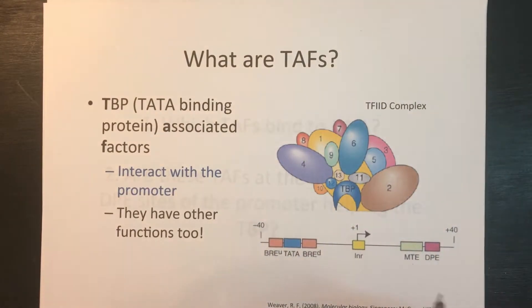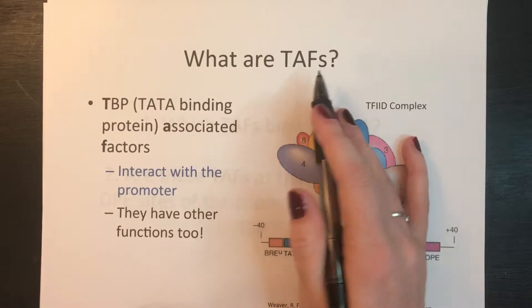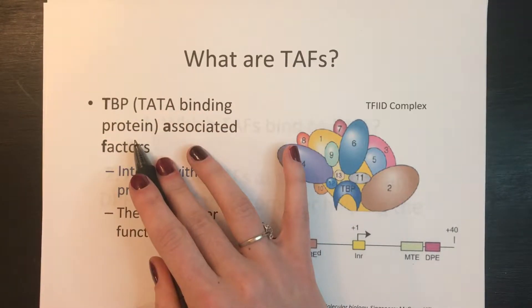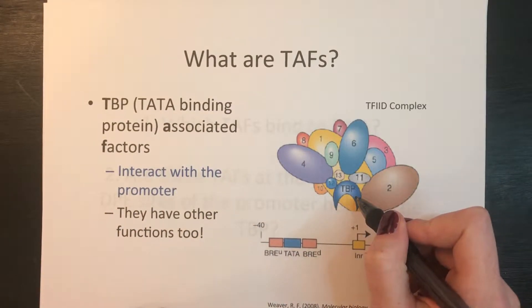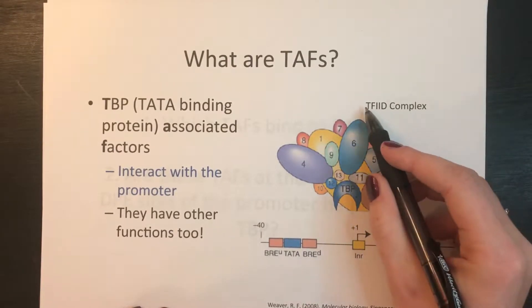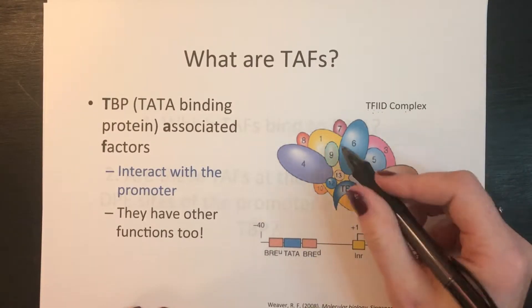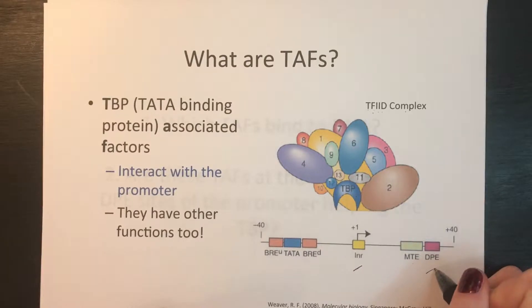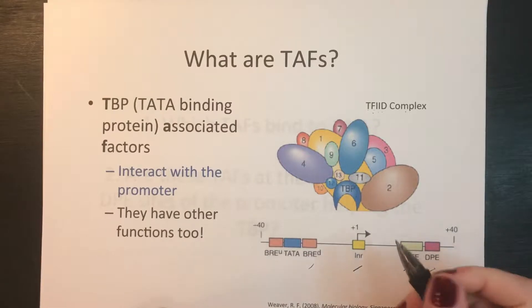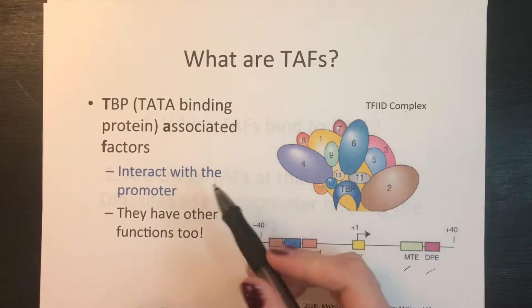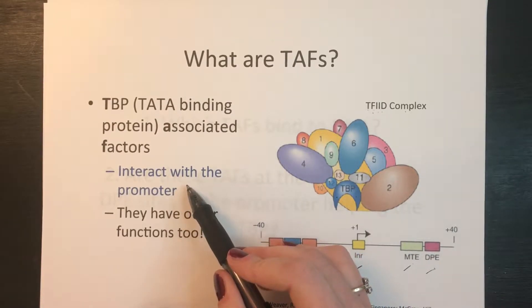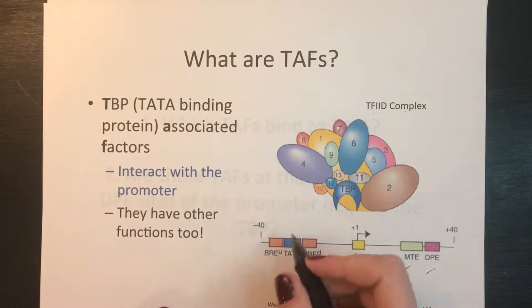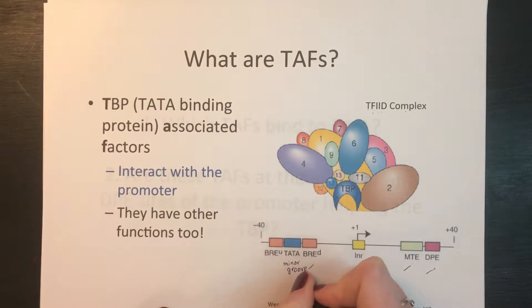The second concept involves the proteins in question today: the TAFs, or TBP-associated factors. TBP stands for TATA-binding protein. Both the TAFs and the TATA-binding protein are part of the TF2D complex — the transcription factor D of polymerase II complex. The TAFs are numbered 1 through 13 and are the proteins that interact with promoter elements such as the initiator, the DPE downstream promoter element, or other promoter proximal elements in conjunction with TBP. One important note about TBP is that TATA, the element it binds to, is on the minor groove, which will be important to remember when we get to the experiment.